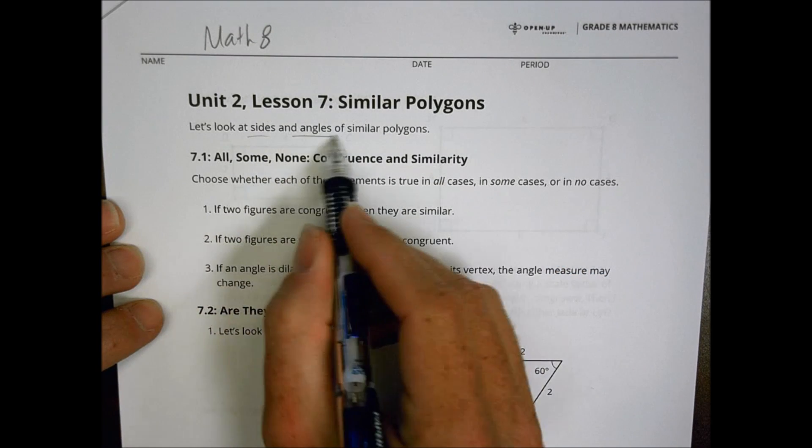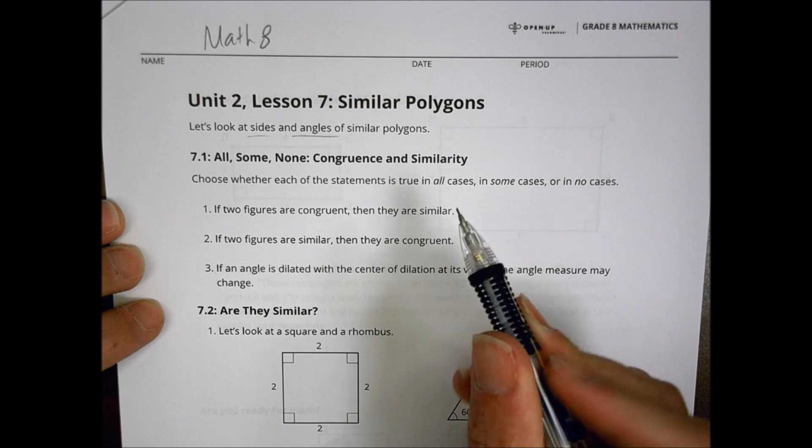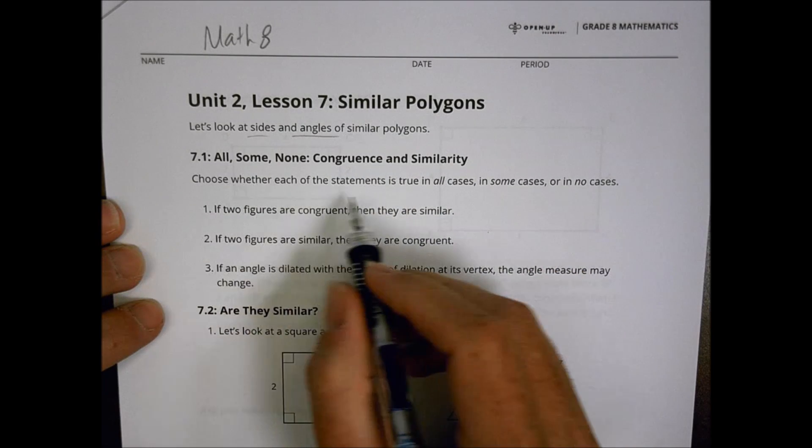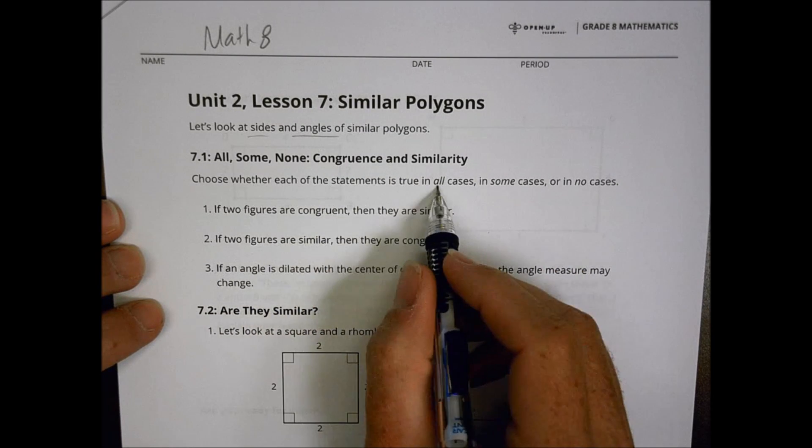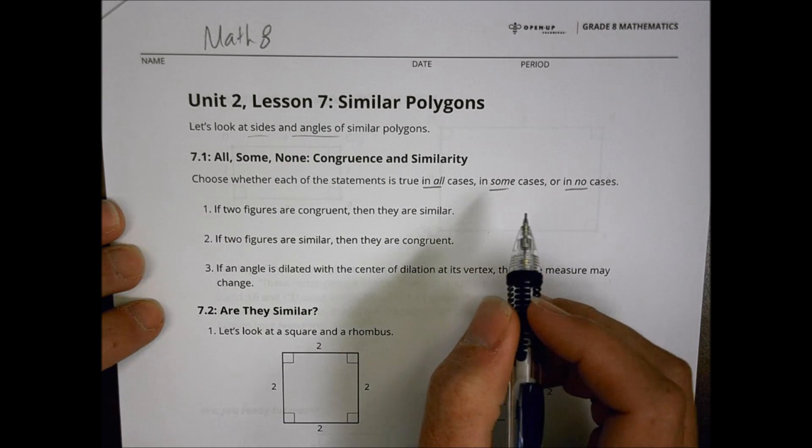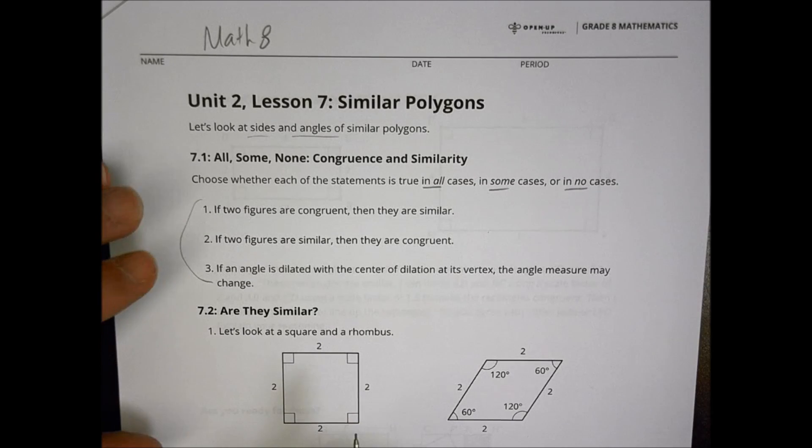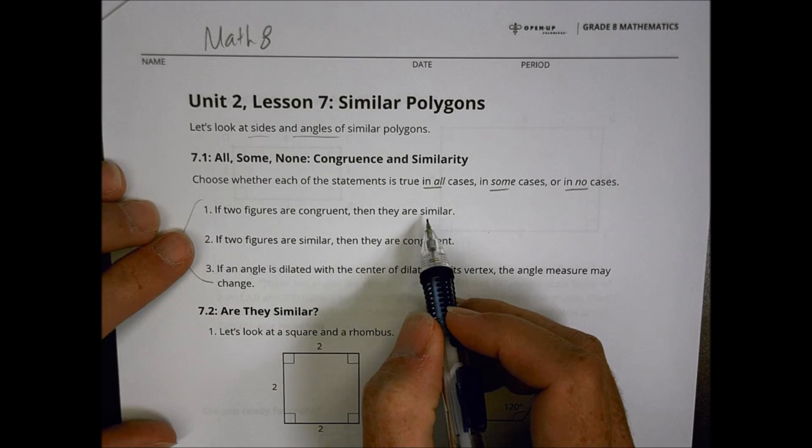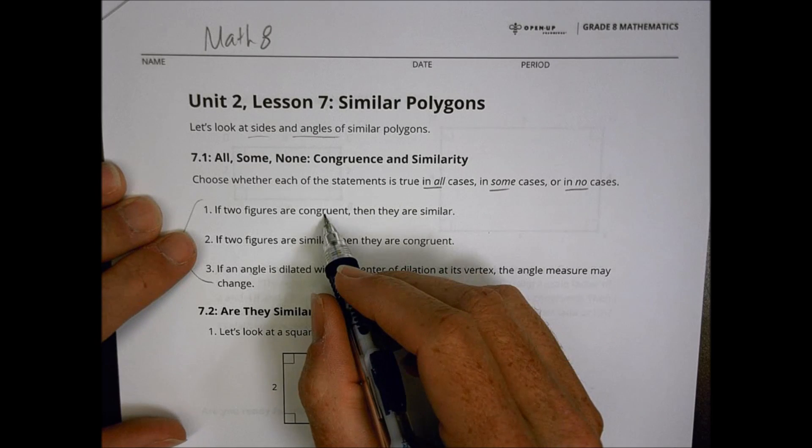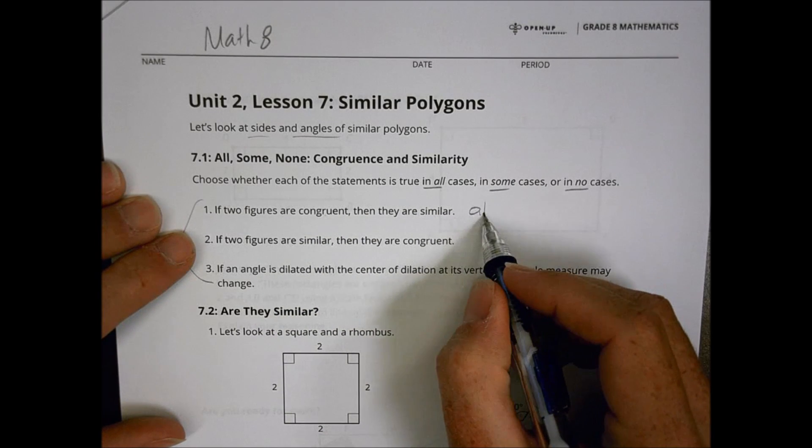We were talking about different sides and angles of similar polygons, and we had a quick conversation about some congruency statements, whether it be true in all, some, or in no cases. You can see a little conversation about if triangles are congruent, figures are congruent, are they similar? And we would say if they're congruent, they are definitely all going to be similar.